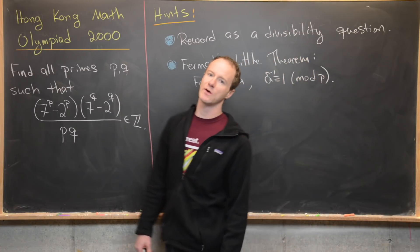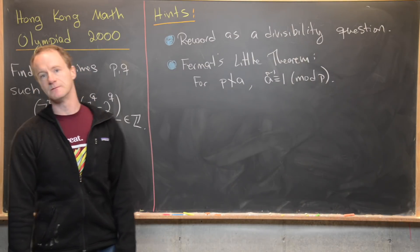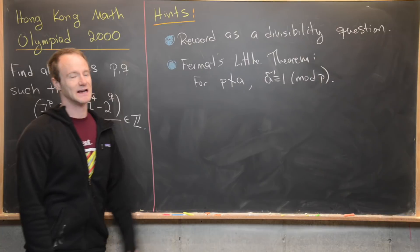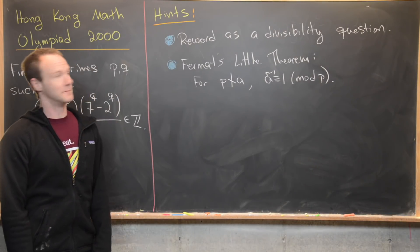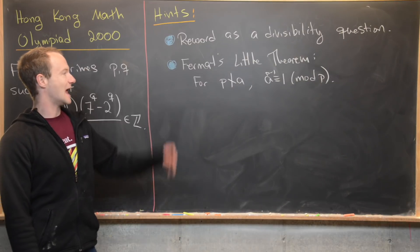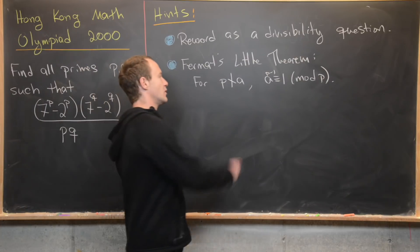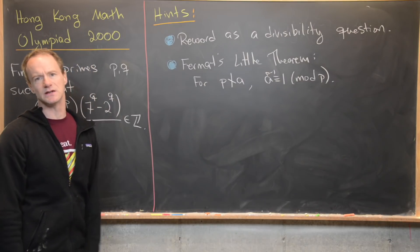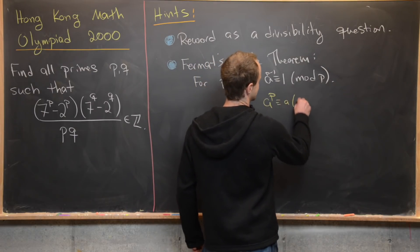Before we do this, let's look at some hints. My first hint is to reword this as a divisibility question — instead of saying the fraction is an integer, talk about something dividing something else. My second hint is to use Fermat's little theorem: if P is a prime that does not divide A, then A^(P-1) is congruent to 1 mod P. Notice that A^P is congruent to A mod P, and that doesn't carry the restriction that P doesn't divide A — that's sometimes seen as a generalization of Fermat's little theorem.